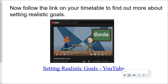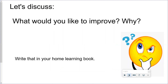Now I would like you to follow the link on your remote learning timetable from our website, and find today's PHAT lesson. Find the link, open the hyperlink, and I would like you to watch the video so you can find out more about how you can set realistic goals. When you come back, after you watch the video, I would like you to think: what would you like to improve? So what is your goal? Why did you choose that goal — why is it important for you to be able to achieve that goal, to be able to do something that you might not be able to do just yet? I would like you to write that down in your home learning book.